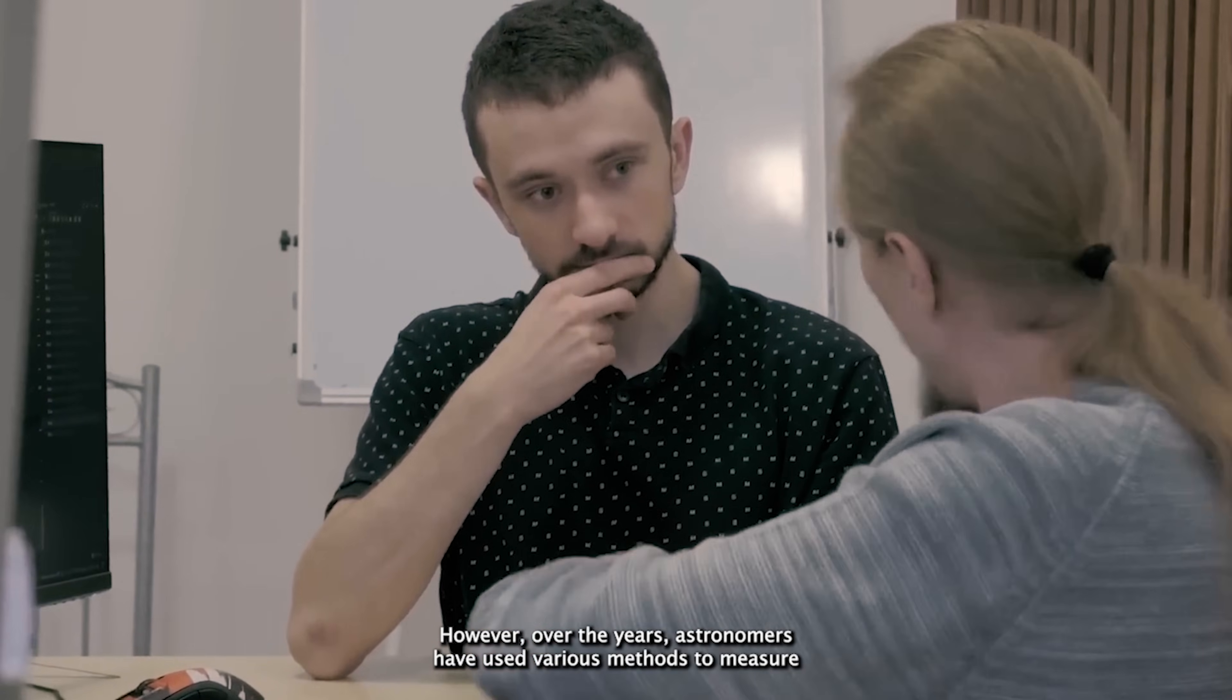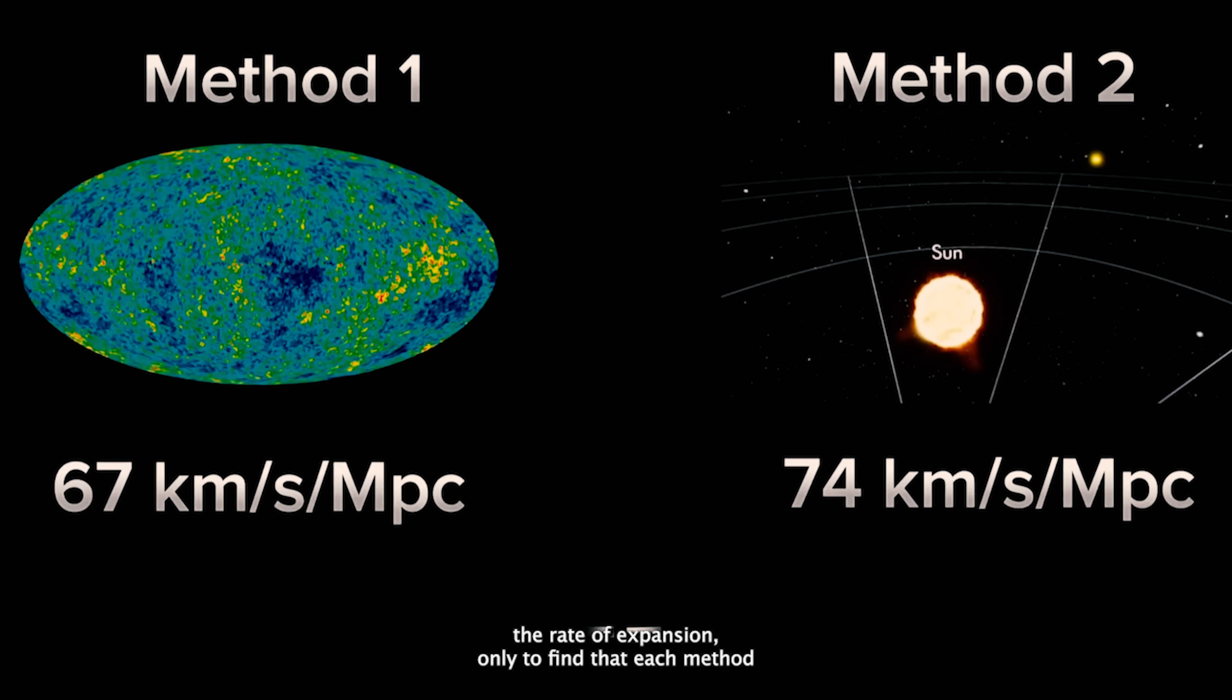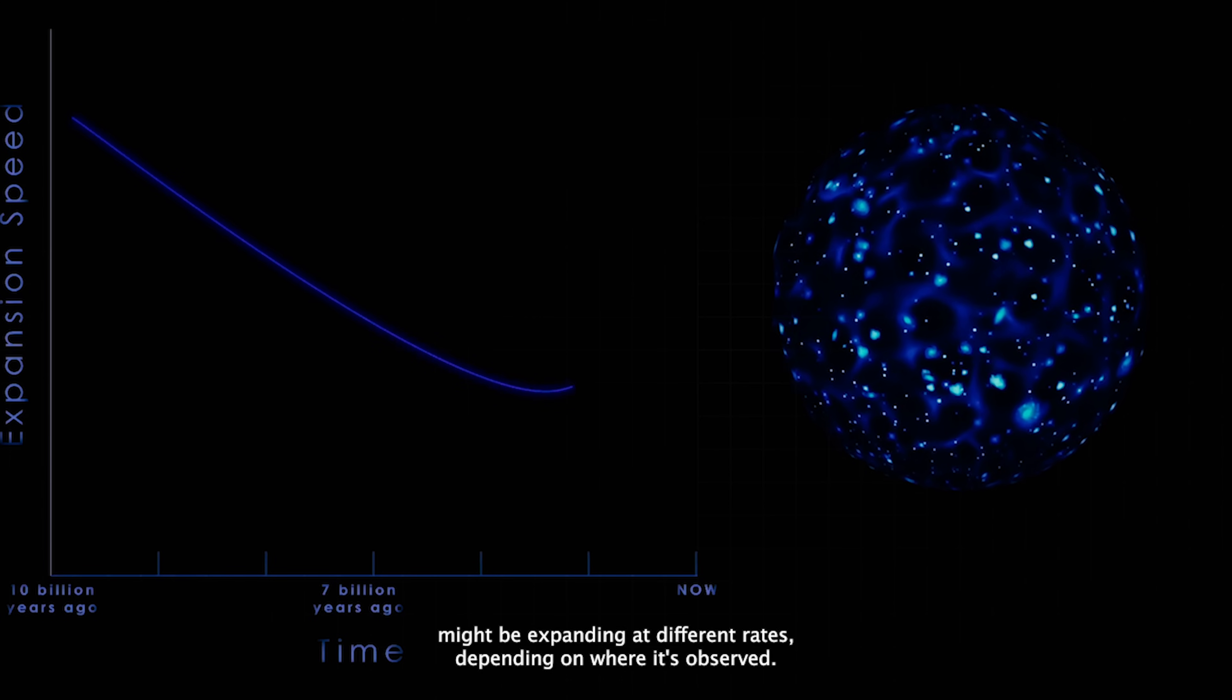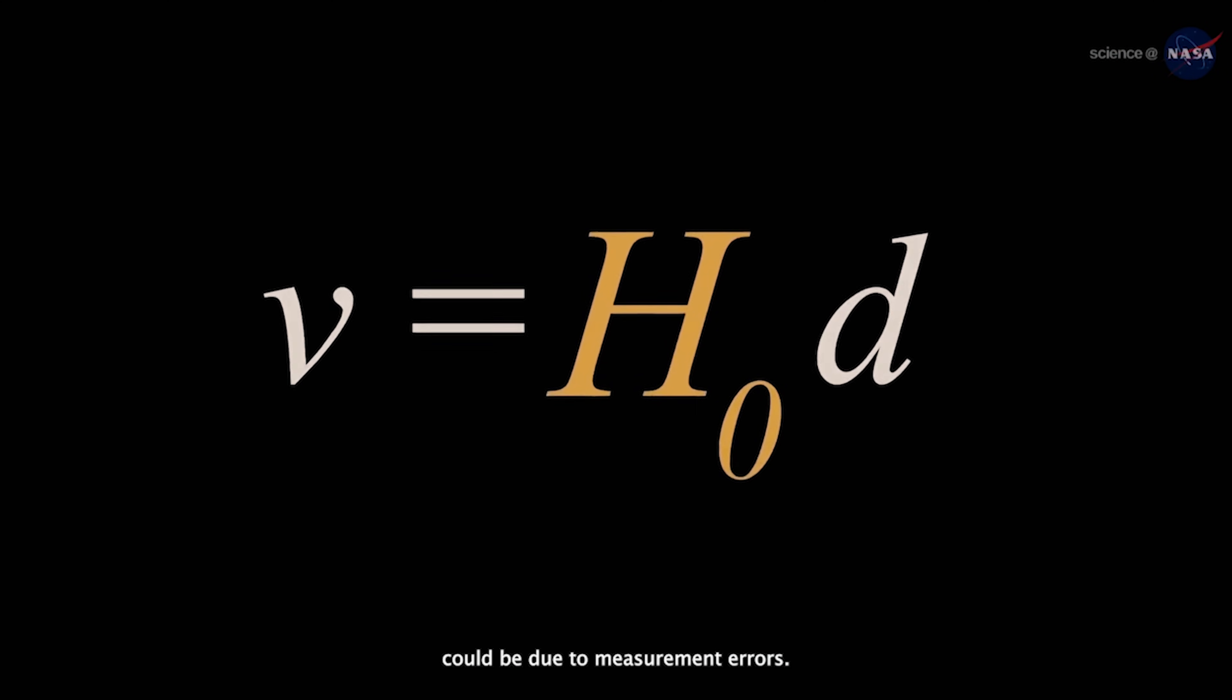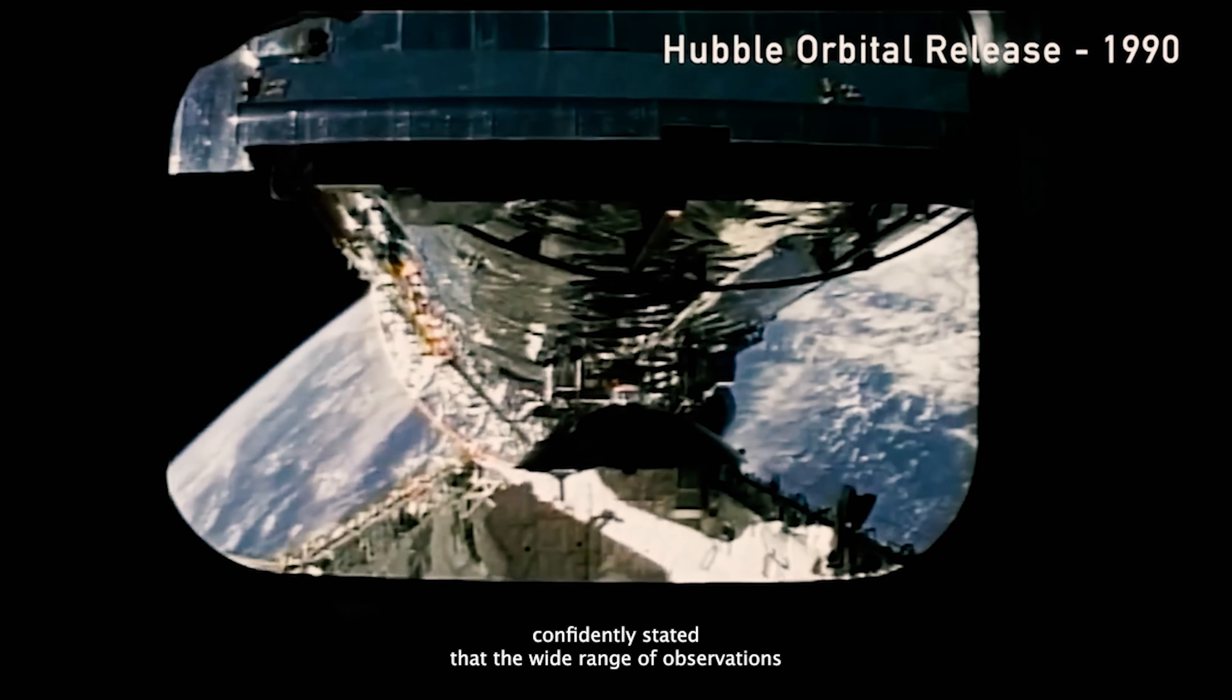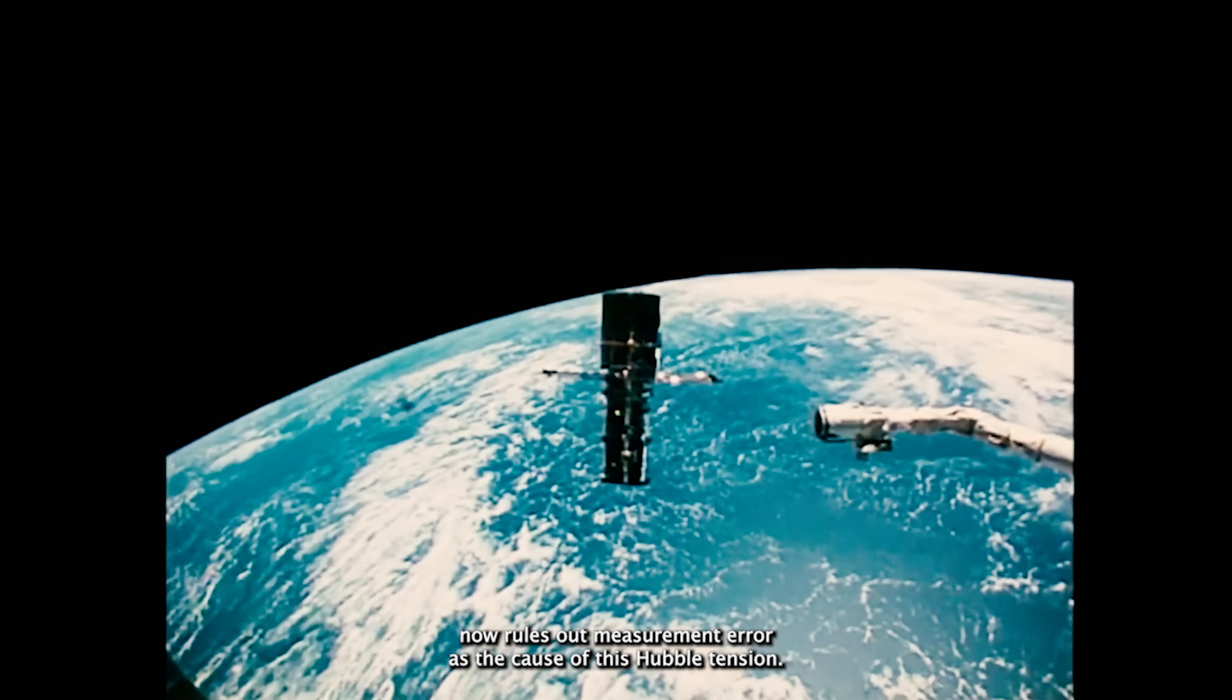However, over the years, astronomers have used various methods to measure the rate of expansion, only to find that each method yields different results. This discrepancy suggests that the universe might be expanding at different rates depending on where it is observed. Initially, some scientists thought this inconsistency could be due to measurement errors. But more recently, Adam Riess, a professor at Johns Hopkins University, confidently stated that the wide range of observations now rules out measurement error as the cause of this Hubble tension.